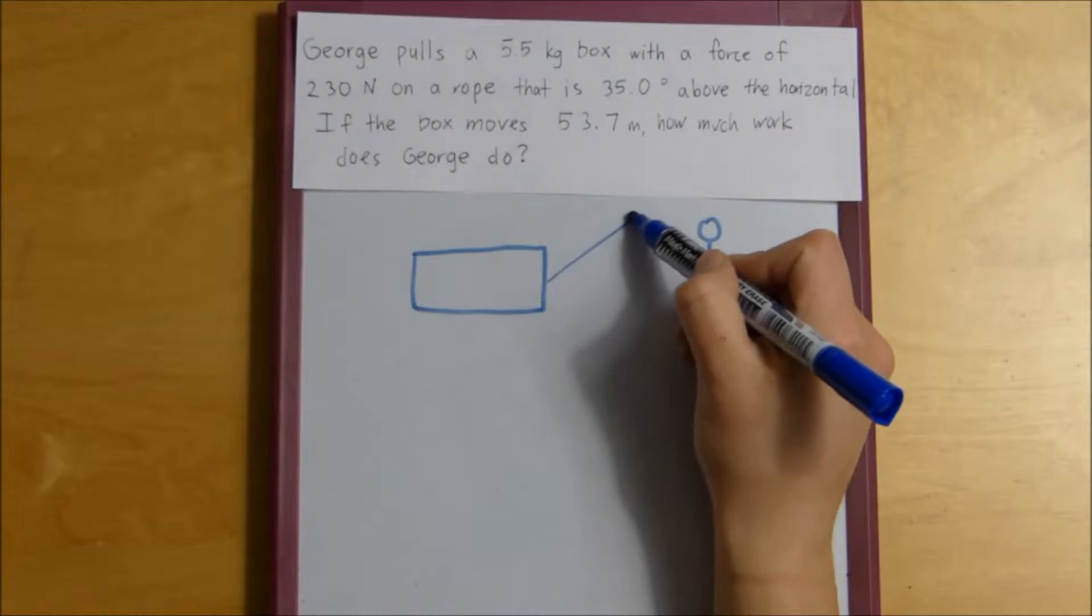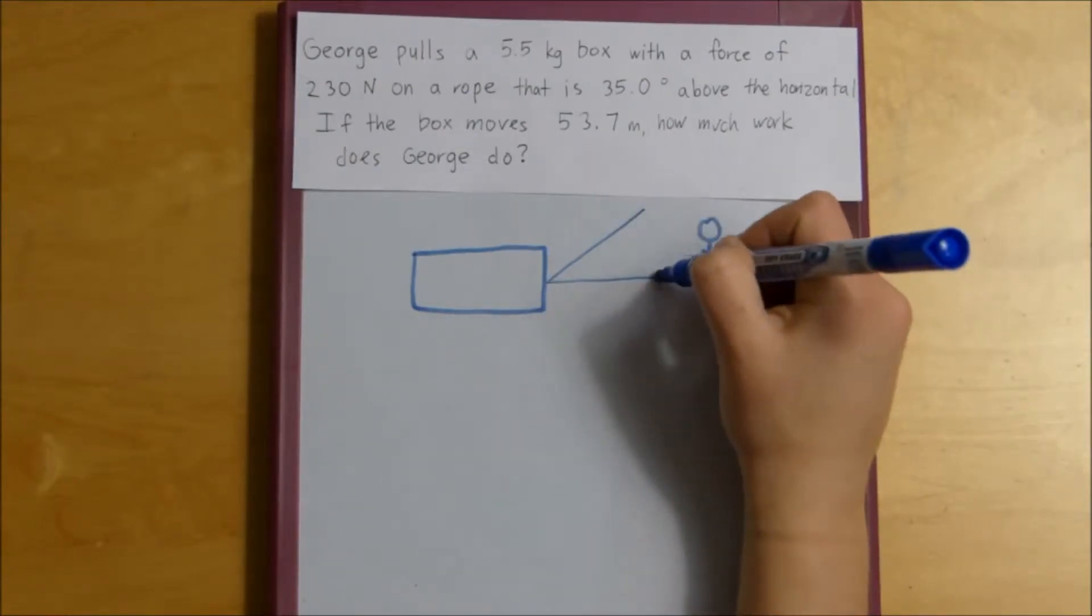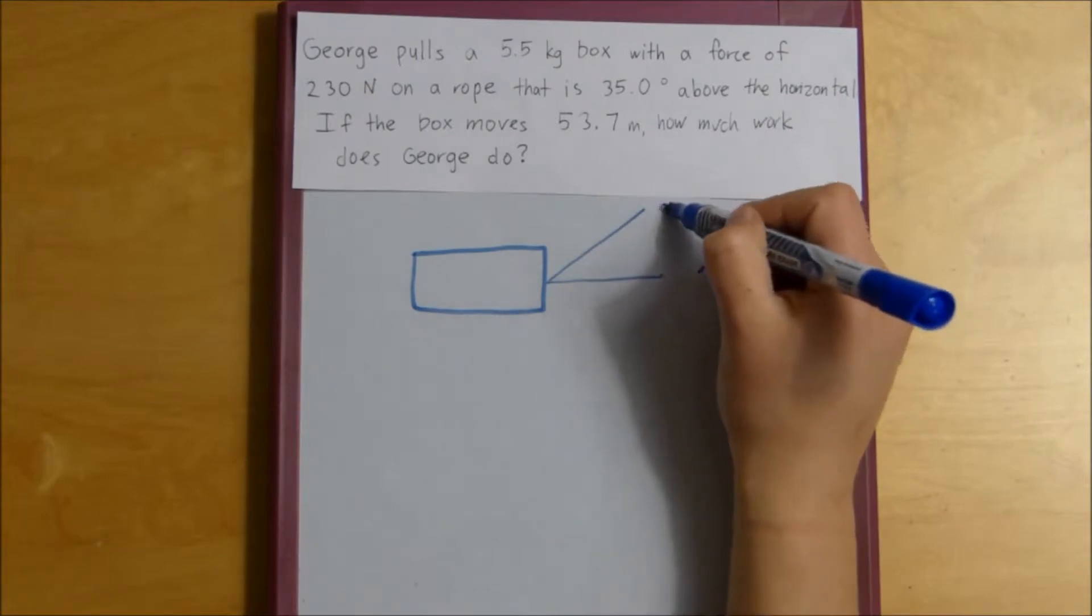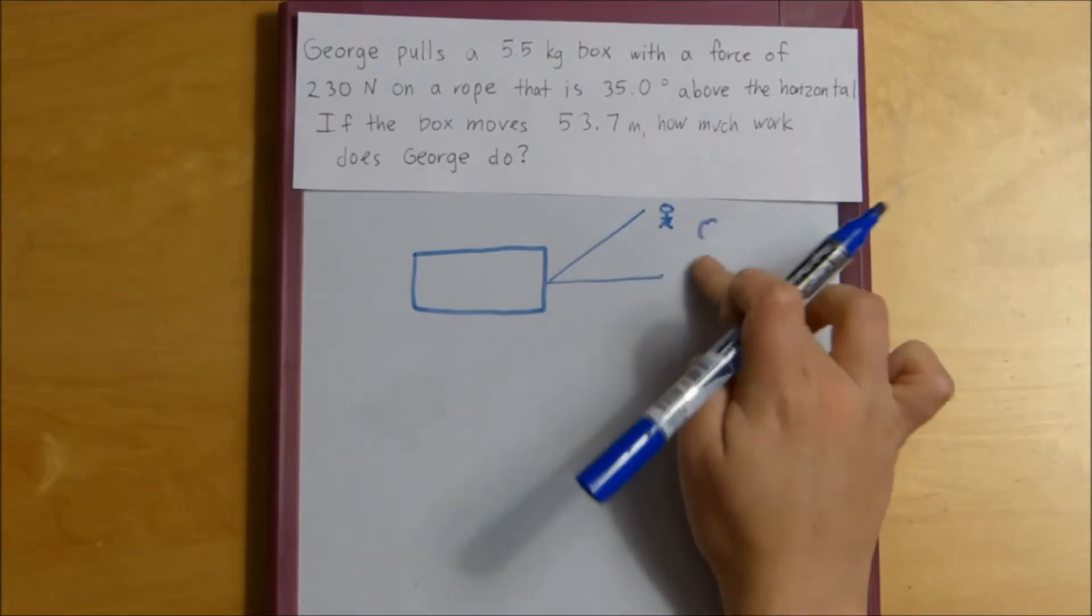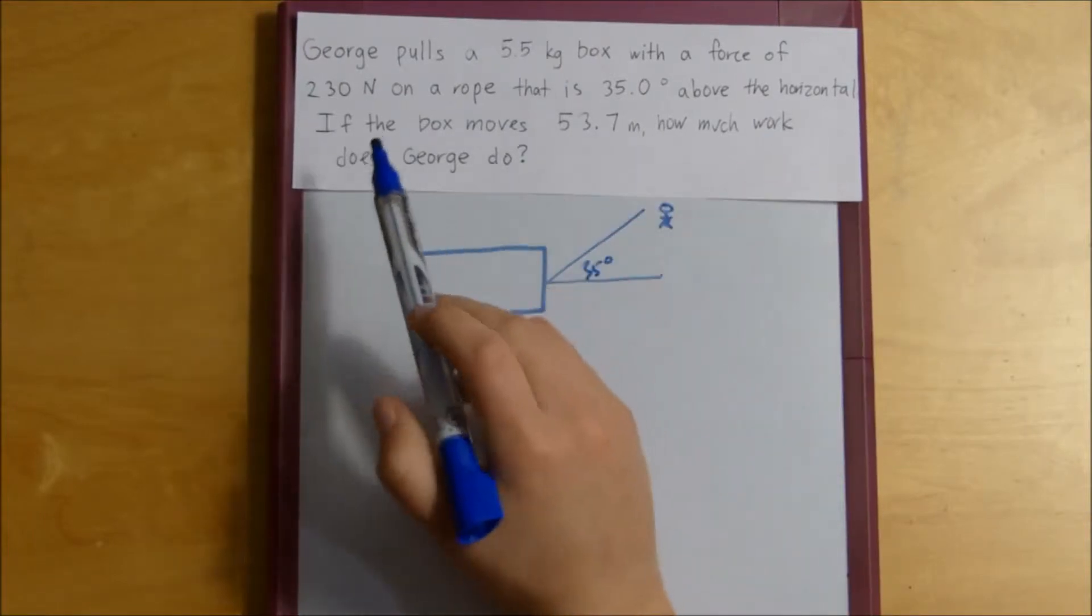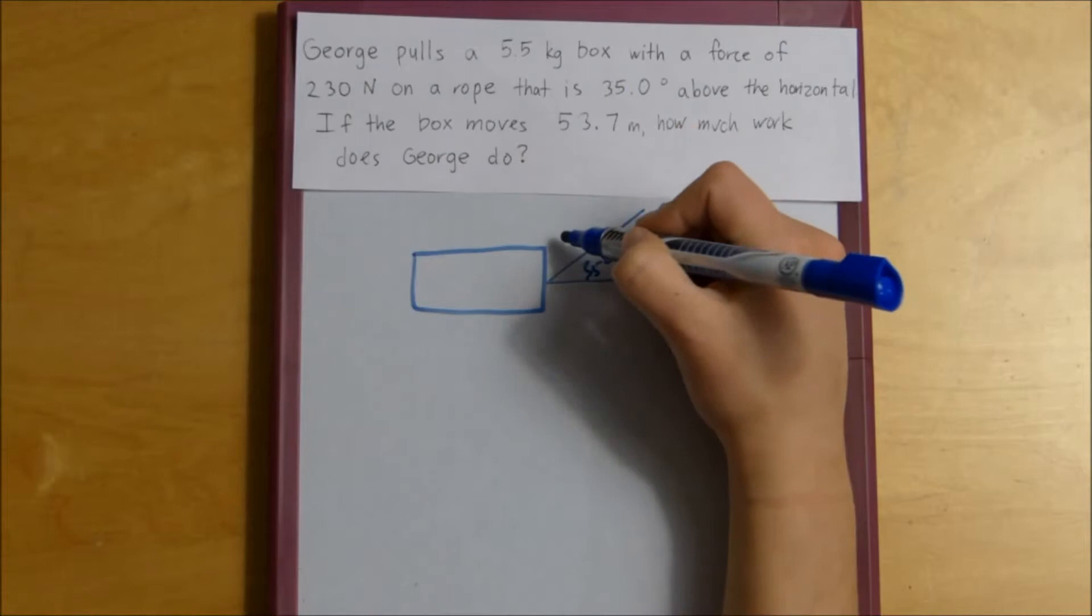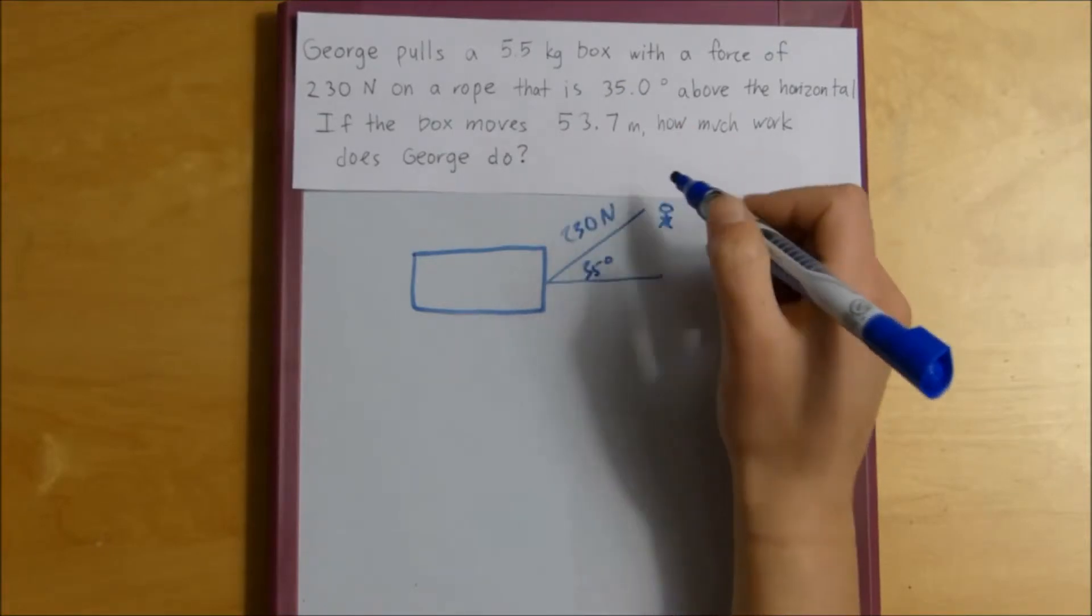So we imagine something like this where George is up here. We'll just redraw him. He's pulling on it with a force of 230 newtons, so that's what our hypotenuse will be.